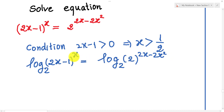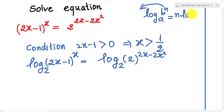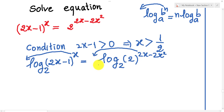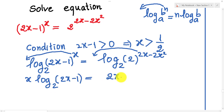We can use the rule: log base A of B to the power n — we can bring n in front of the log and write n times log base A of B. So I bring h in front on the left, and (2h minus 2h squared) in front on the right: h times log base 2 of (2h minus 1) equals (2h minus 2h squared) times log base 2 of 2.